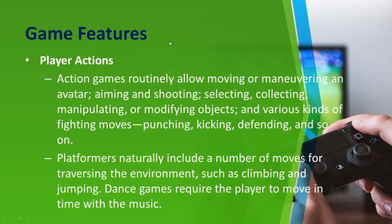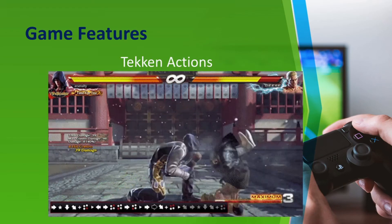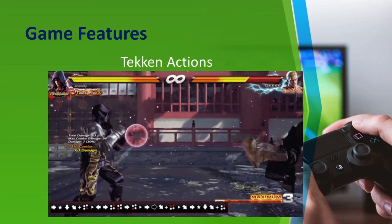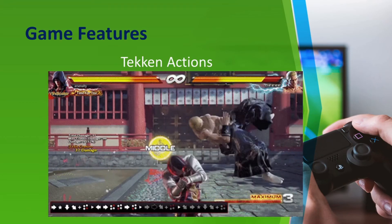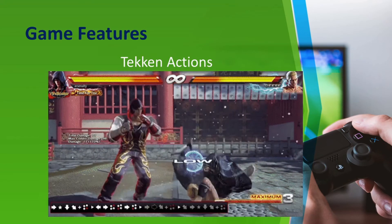For player actions, action games routinely allow moving or maneuvering an avatar, aiming and shooting, selecting, collecting, manipulating, or modifying objects, and various kinds of fighting moves like punching, kicking, and defending. Platformers include a number of moves for traversing the environment such as climbing and jumping. Dance games require the player to move in time with the music. In fighting games like Tekken, you can perform different types of moves: punch, kick, jump, dodge, and more.